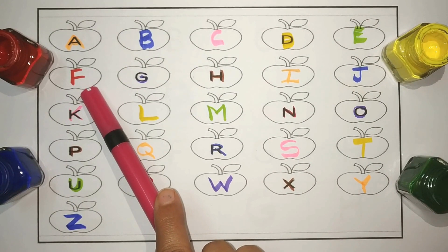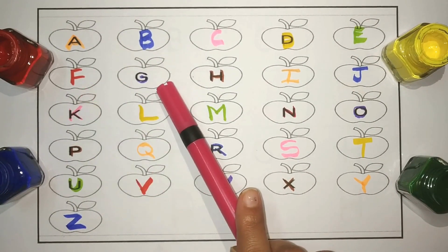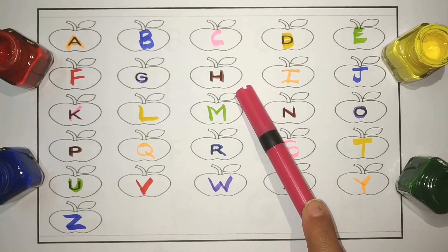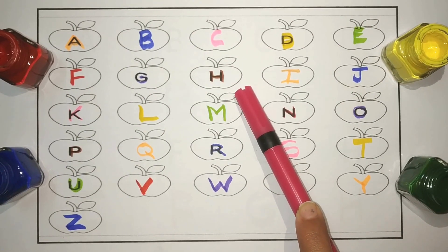F. F for fish. G. G for grapes. H. H for horse.